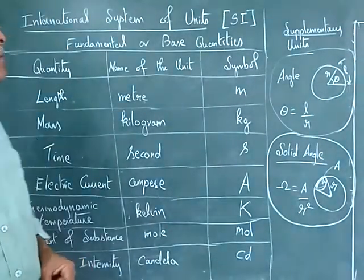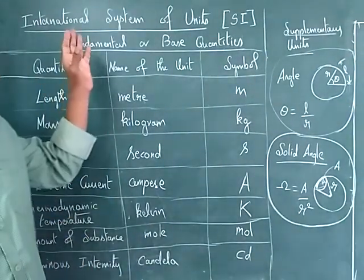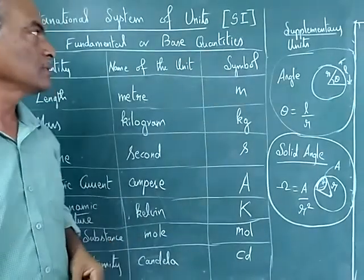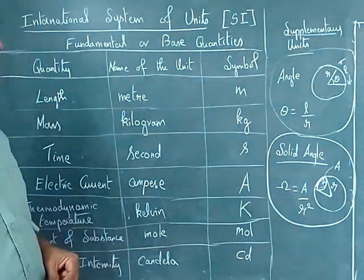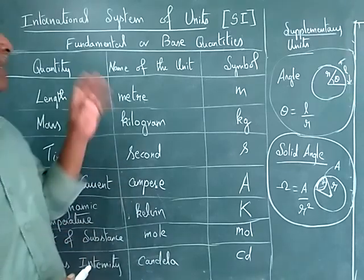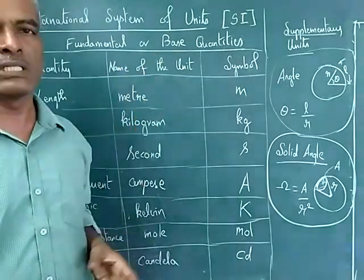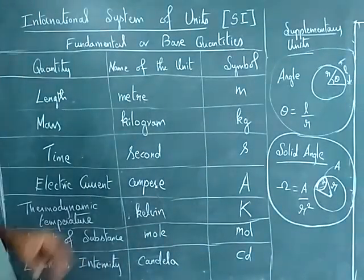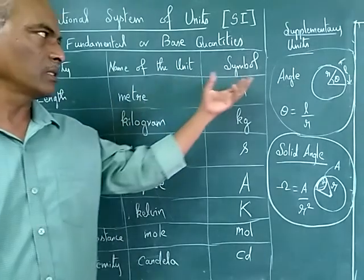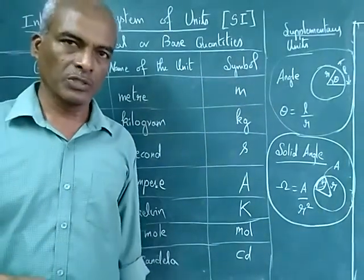Today we are going to see about International System of Units, shortly called as SI Units. These units are otherwise called as Fundamental or Base Quantities. First column we have quantity, second column name of the unit, and third column symbol we are going to use.